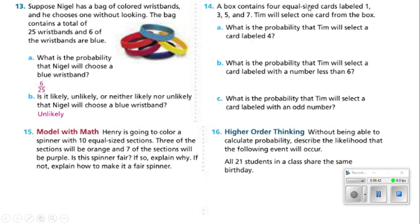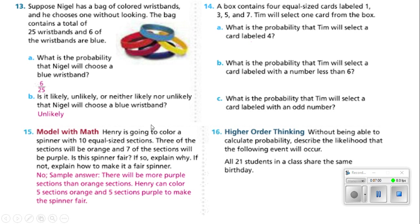Number 14: a box contains four equal-sized cards labeled one, three, five, and seven. None of these cards contain four, so the probability of selecting a card labeled four is zero. Number 15: Henry is going to color a spinner with 10 equal-size sections — three will be orange and seven will be purple. That is definitely not fair; there will be more purple than orange sections. Henry can color five sections orange and five sections purple to make it fair.